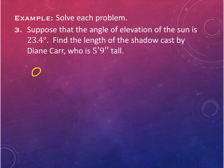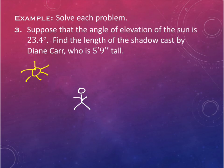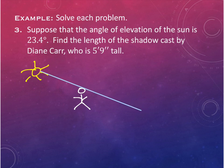So we have the sun shining down on Diane Carr, casting a shadow on the ground. The angle of elevation is always from the horizontal up to something - in this case from the horizontal up to the sun. Our angle of elevation is 23.4 degrees, marked here in this corner of the triangle.